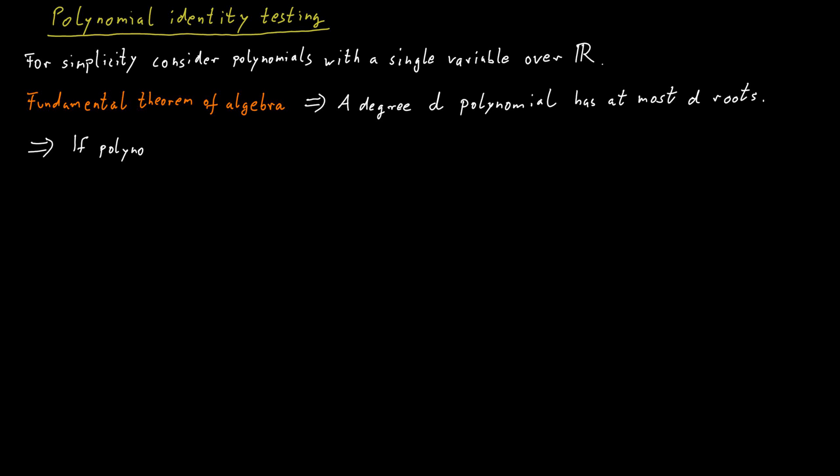So again, if our given polynomial is not identically 0, then it can be equal to 0 for at most d different values of x, if d is the degree of the polynomial.